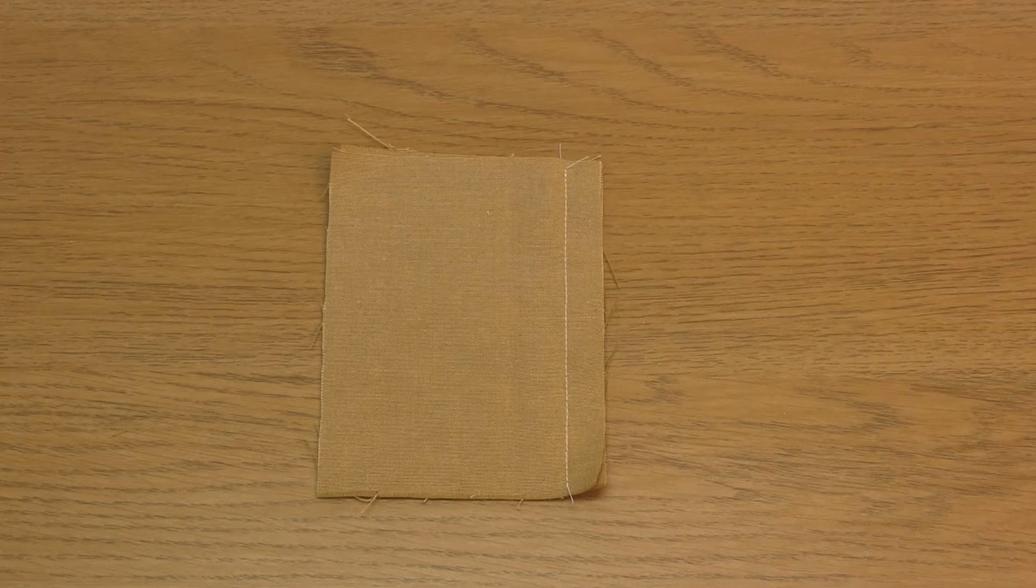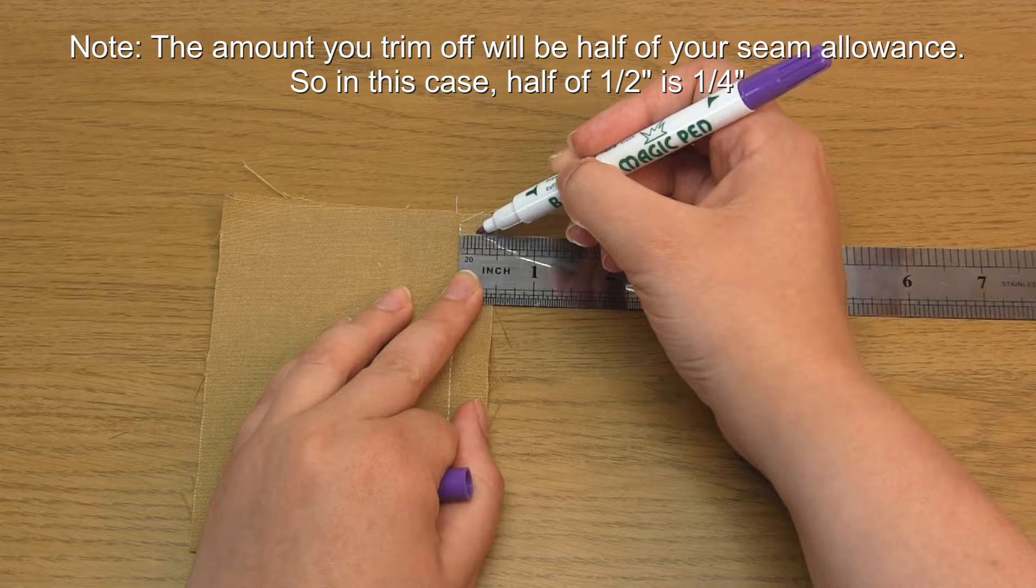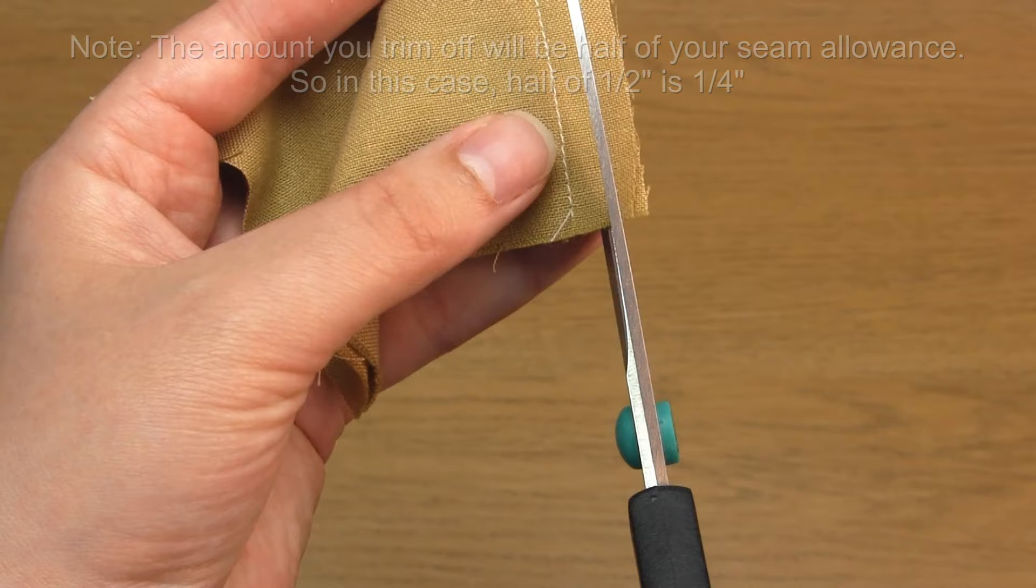I then trimmed this seam allowance down by a quarter of an inch, and this left me with a quarter of an inch of fabric between the sewn line and the edge. I'll talk a bit more about this trimming stage later on and whether or not it's vital for you to do.